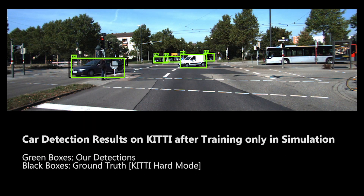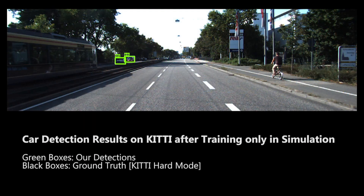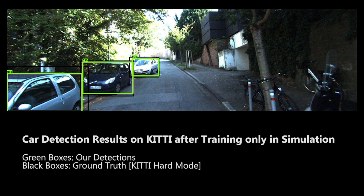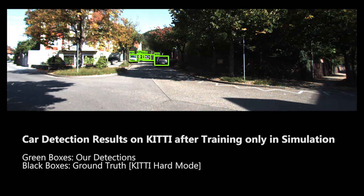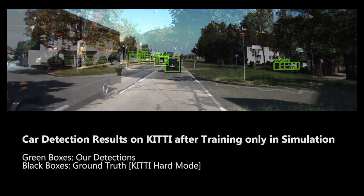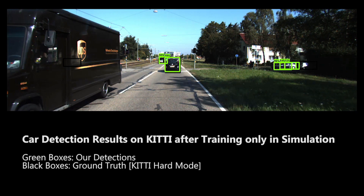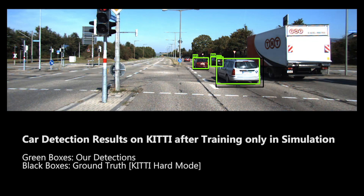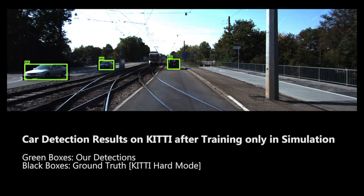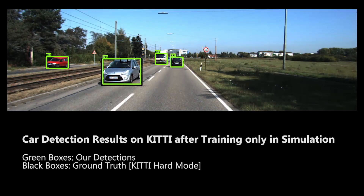Here we show detection results of cars on the KITTI benchmark after training a neural network using only synthetic data generated from structured domain randomization. The green boxes show the detection results, which in many cases are almost indistinguishable from the ground truth shown as black boxes.